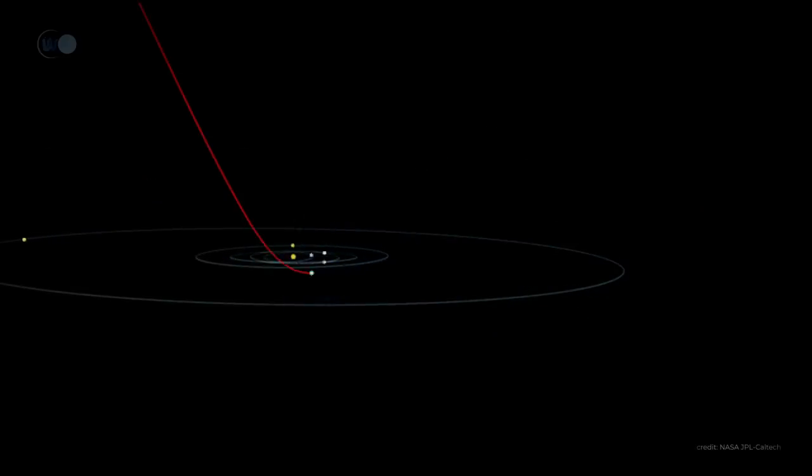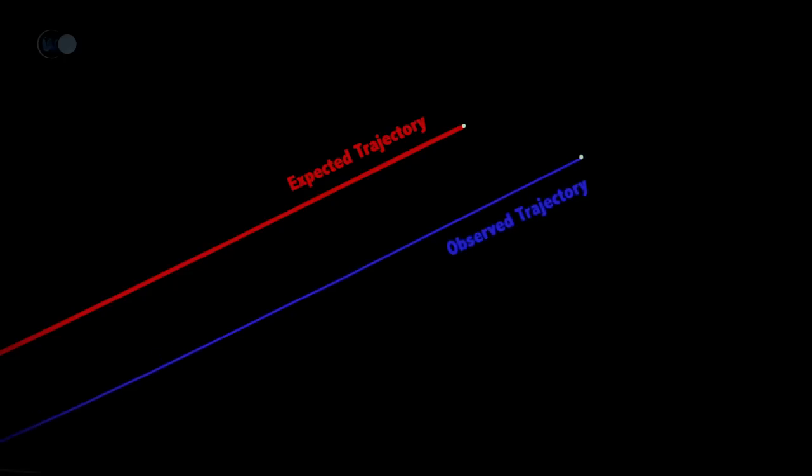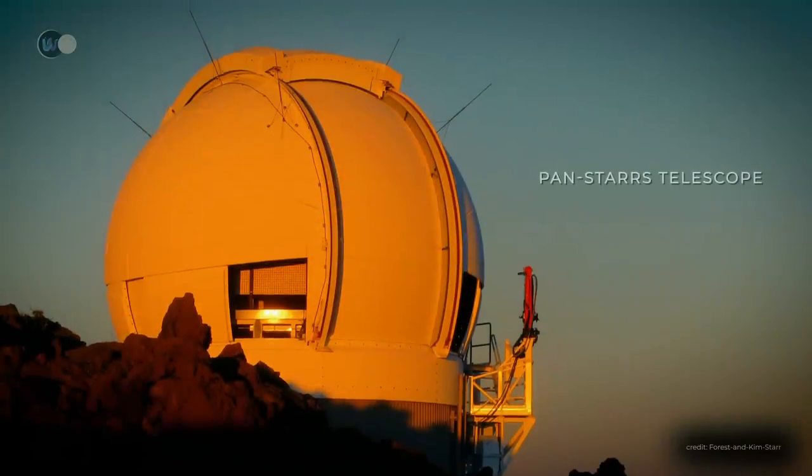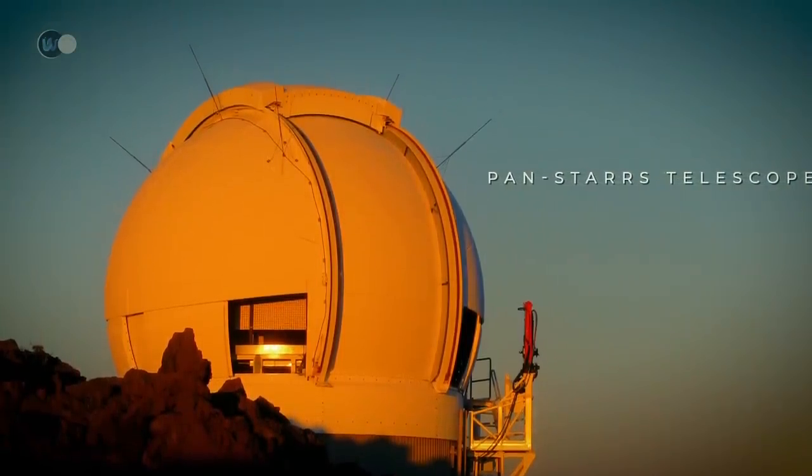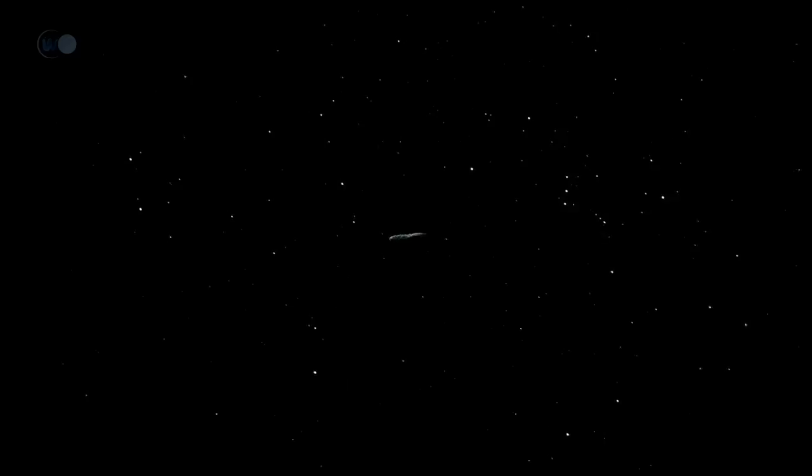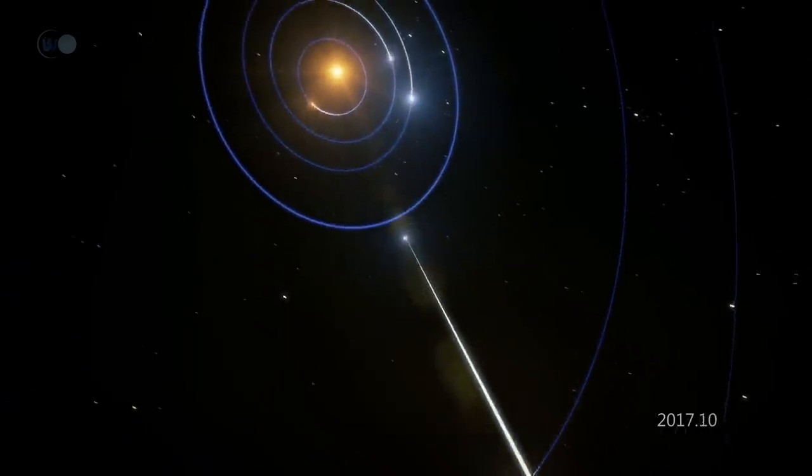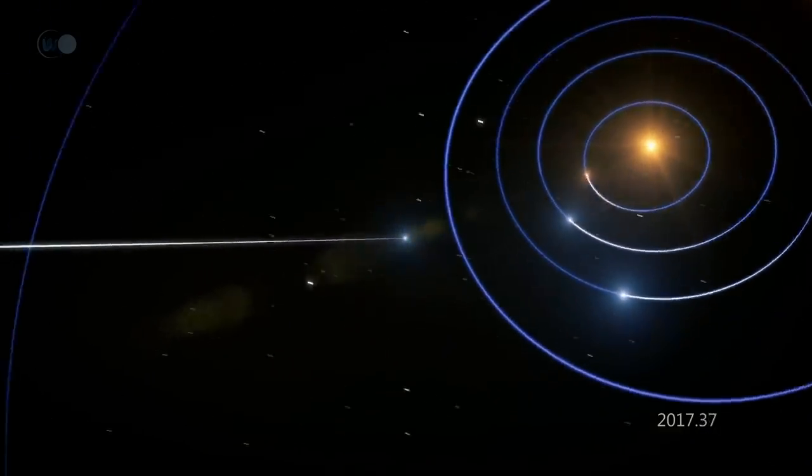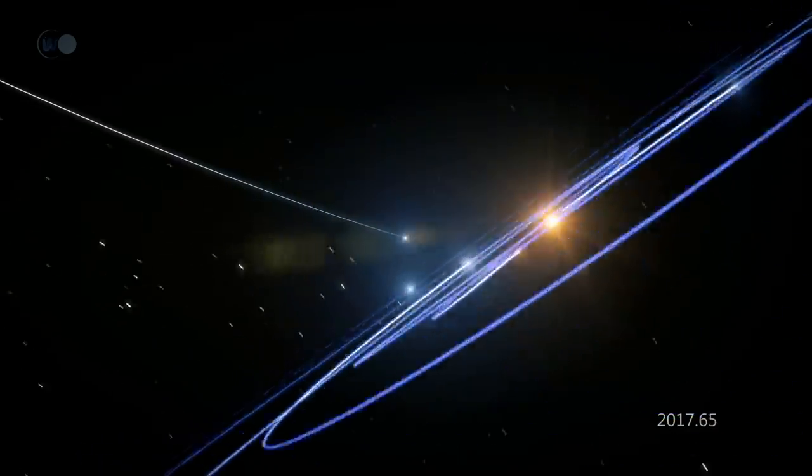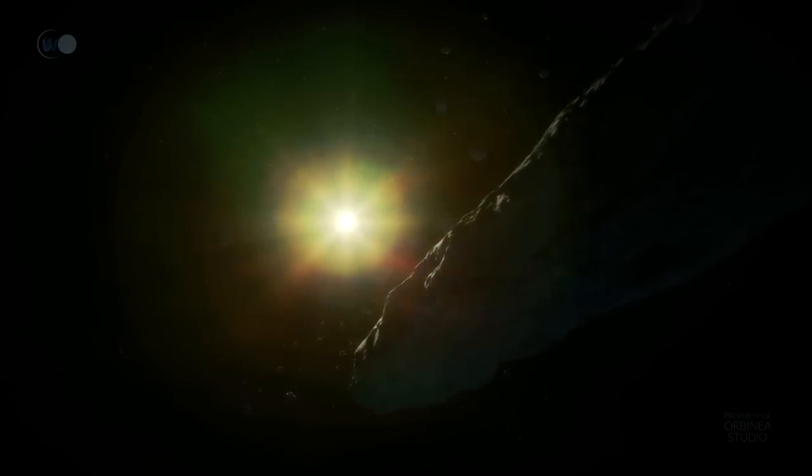Oumuamua is the very first interstellar object in the history of astronomy to have been detected. Discovered thanks to Hawaii's Pan-STARRS telescope, it was given its name because Oumuamua means messenger in the Hawaiian language. Its hyperbolic trajectory and abnormally high speed establish that it does indeed come from another star and that it is crossing our solar system for the first and only time. Astronomers who have always been on the lookout for such an incursion were greatly surprised by their observations. Indeed, they had expected to study an object which, like a comet, would have been composed of ice and dust, formed at some distance from its host star, and therefore easily expelled during gravitational perturbations. And their findings left them perplexed to say the least.